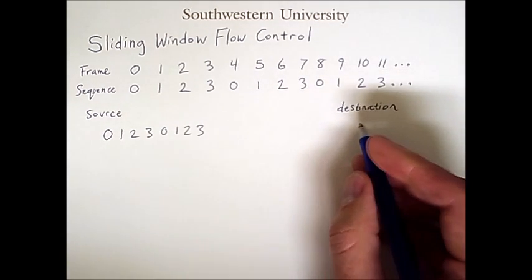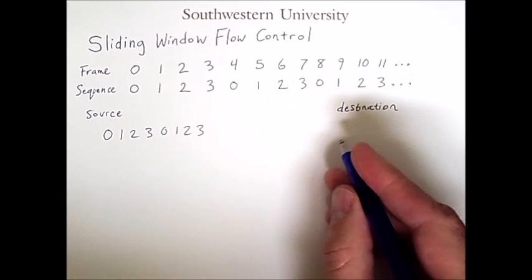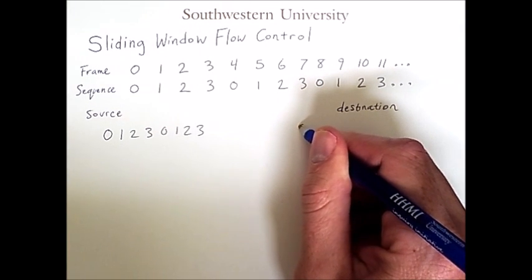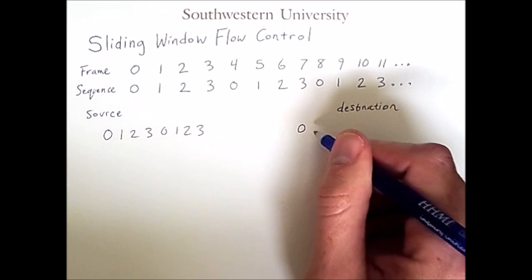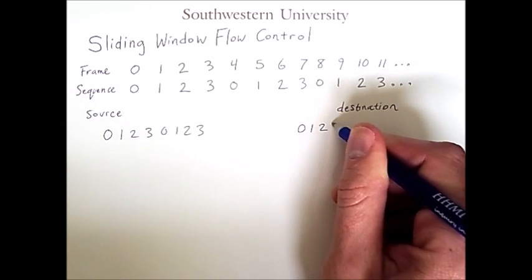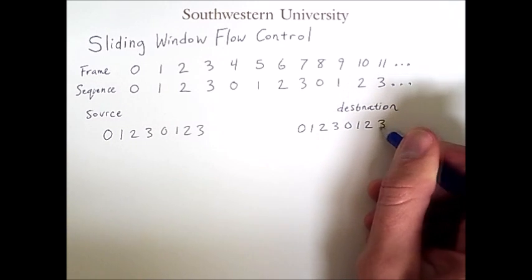And the destination is expecting these frames. So it knows that the next frame it should receive should have a sequence number of 0, and after that it should receive a frame with a sequence number of 1, and then 2, and so on in the same repeating sequence.